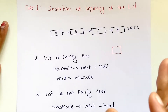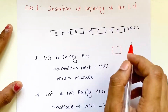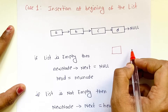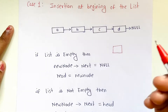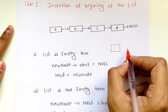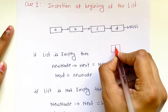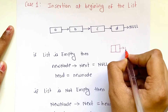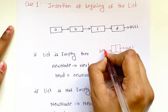Let's start with the first case: insertion of a node at the beginning of the list. Suppose this is the node that you want to insert. First, check whether the list is empty or not — that means check whether any other nodes are present. If no nodes are present, you have to make the next field of the new node null and make this node the head node.